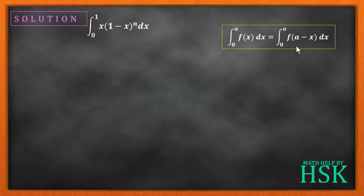According to this property of definite integrals, you can see that if the limit is given from 0 to a, then for the given function you can change the value of x as a minus x. So we are going to replace x by 1 minus x.